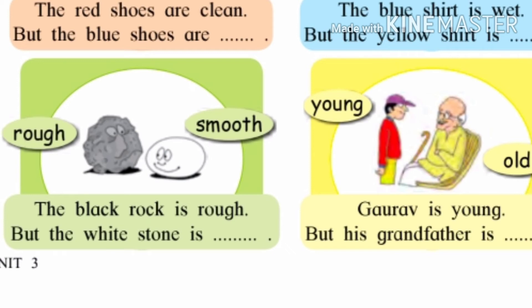Now in the next picture, the picture of a black rock and a white stone is given. Rough word is near the black rock and smooth word is near the white stone. Rough manje khad badit, smooth manje mau. The black rock is rough but the white stone is smooth. Kaala khadak haa kharbadit ahe, parantu paandra dhagad haa mau ahe. Smooth and rough, both words are opposite to each other.